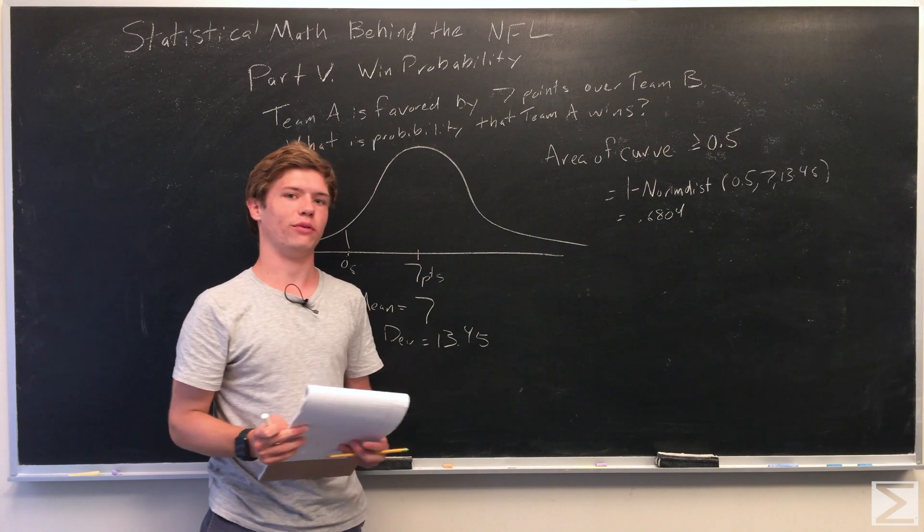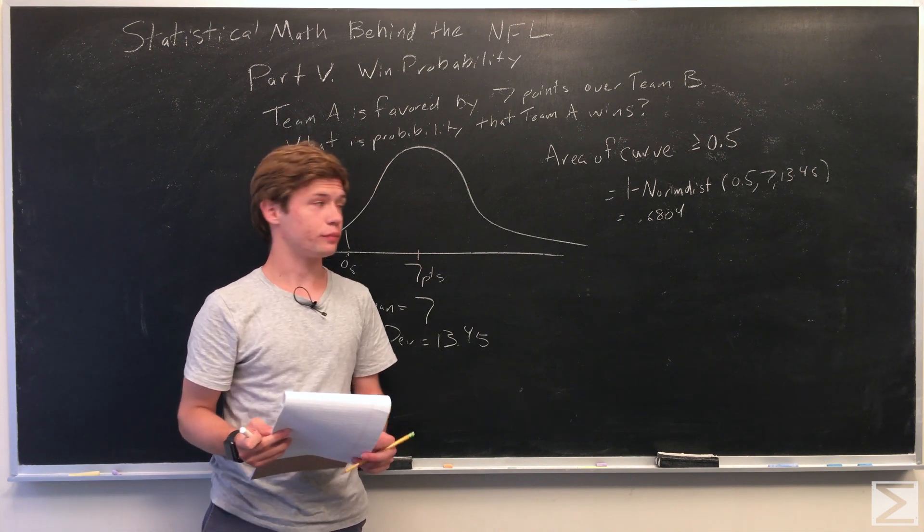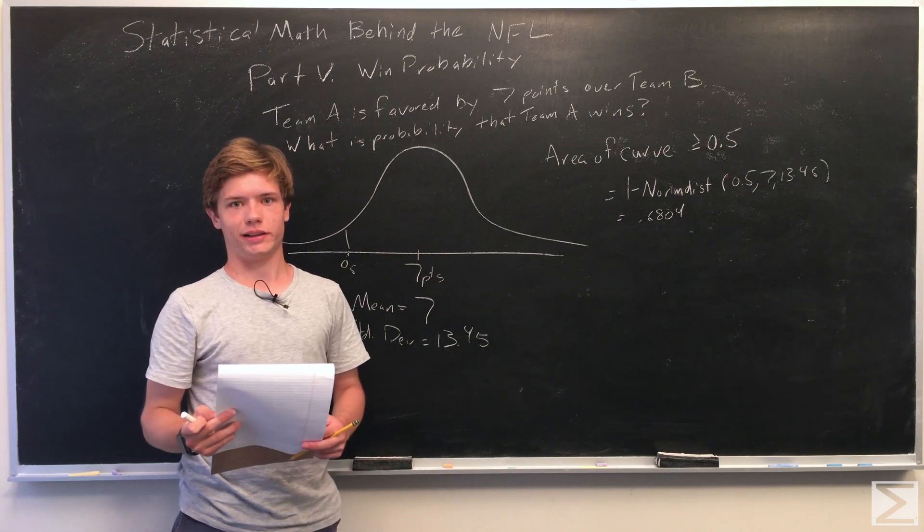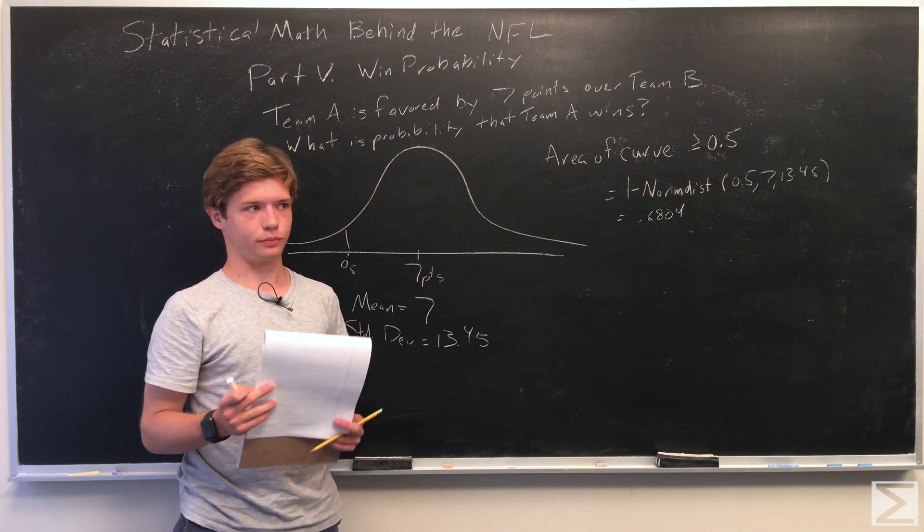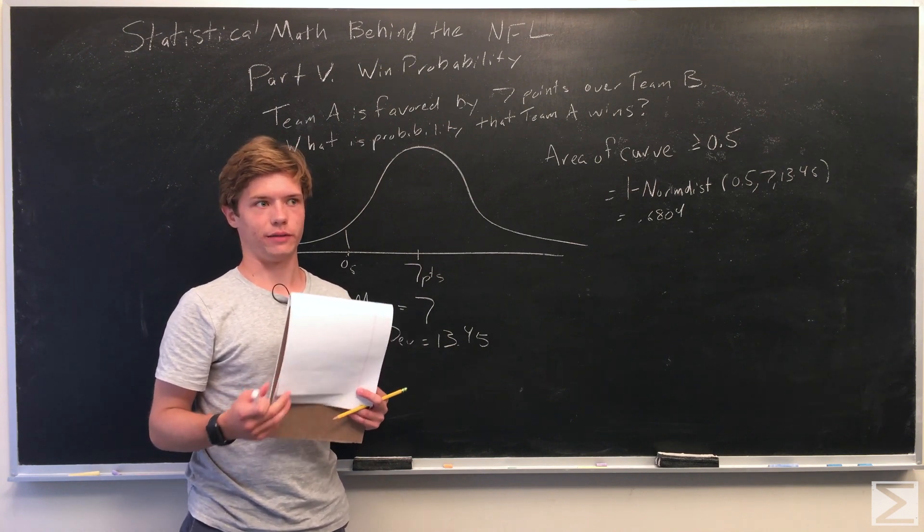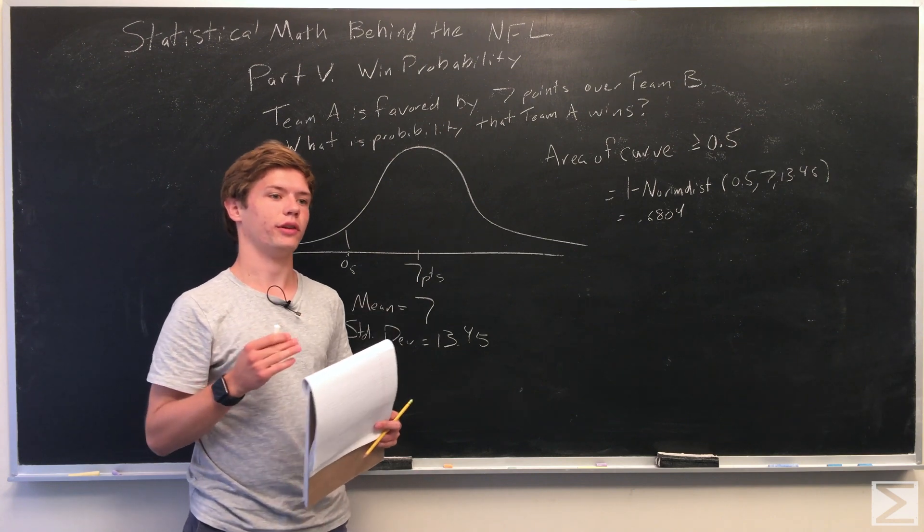In the NFL, you don't have to win necessarily outright. You can also have a game go to overtime. I'm supposed to account for this fact by figuring out what the probability is that a game will end up in overtime. So any value that's between 0.5 for Team A to negative 0.5 for Team B.